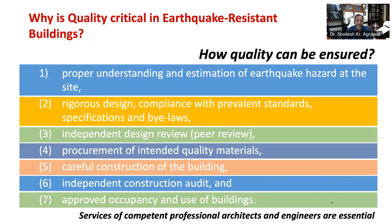Building owners need to seek professional services that comply with: proper understanding and estimation of earthquake hazard at the site, rigorous design, compliance with prevalent standards, specifications and bylaws, independent design review (peer review), procurement of intended quality materials, careful construction of the building, independent construction audit, and approved occupancy and use of buildings. Any shortfall in implementing any of these aspects may compromise safety of life and property during earthquake shaking. Services of competent professionals — architects and engineers — are essential to incorporate these aspects in buildings, and these professionals need to have past experience of successfully providing such services.